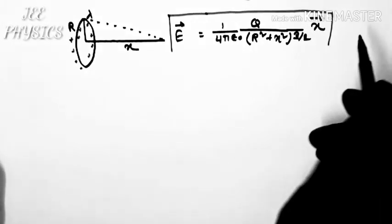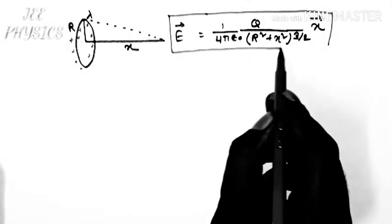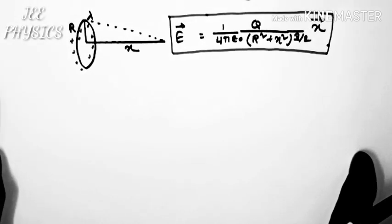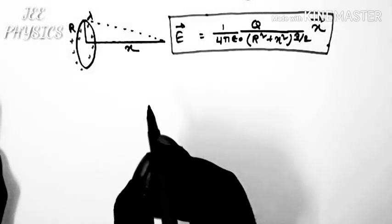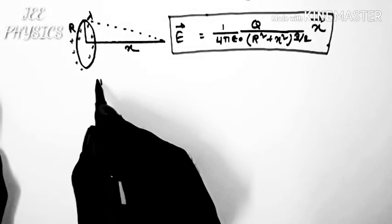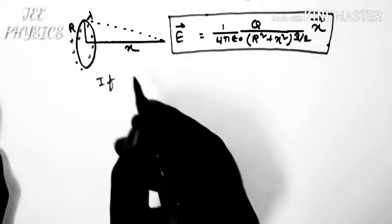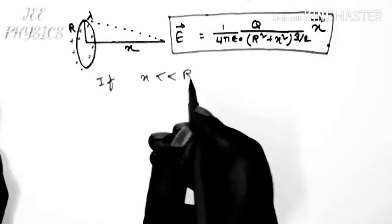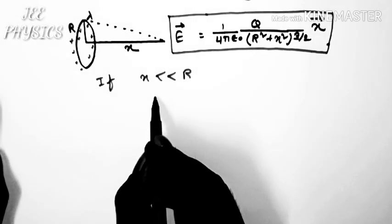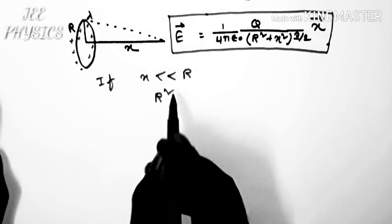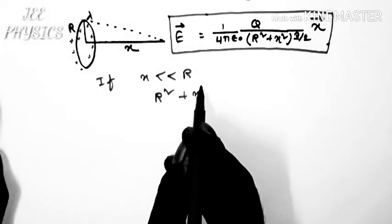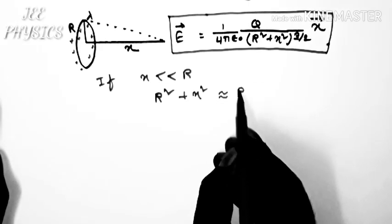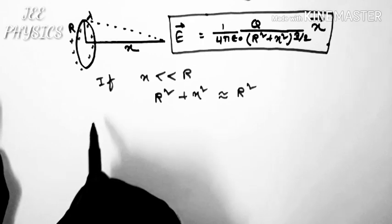Now we can discuss here the result of this video that if x is very much less than r, then we can write r square plus x square is nearly equal to r square.